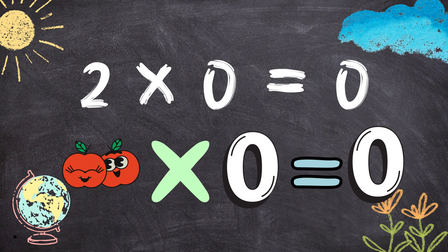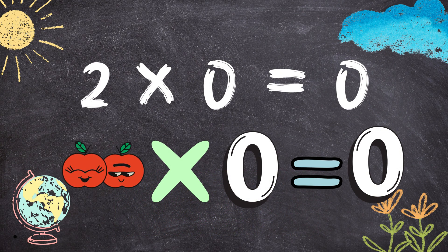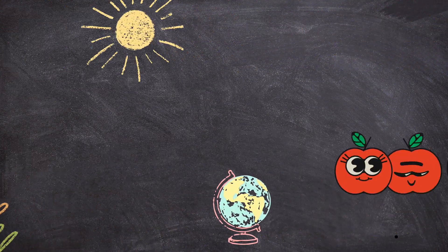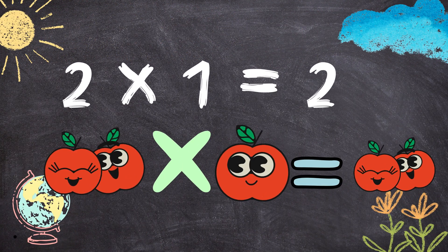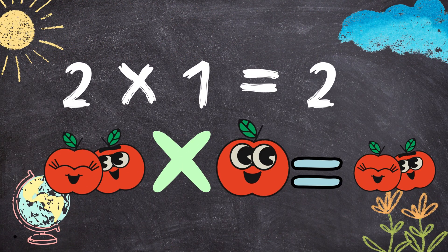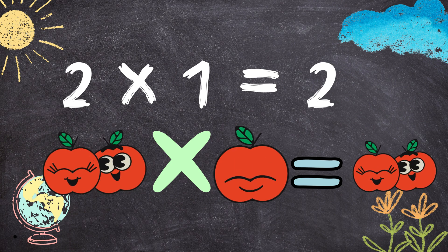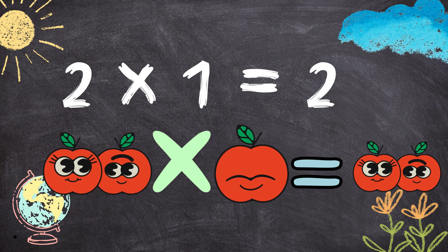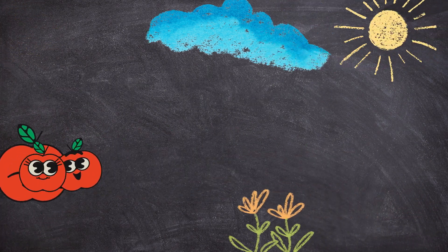Two times zero equals zero. Two apples multiplied by zero apples will give you zero. Two times one equals two. Two apples multiplied by one apple will give you two apples.